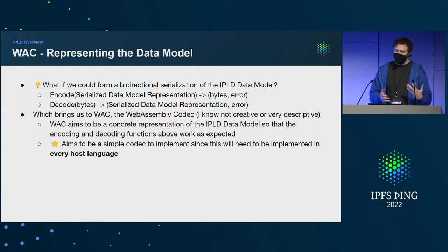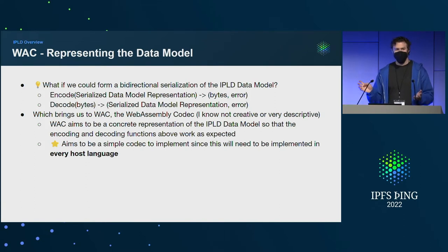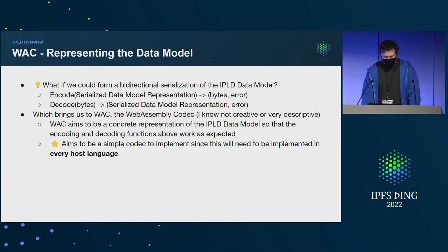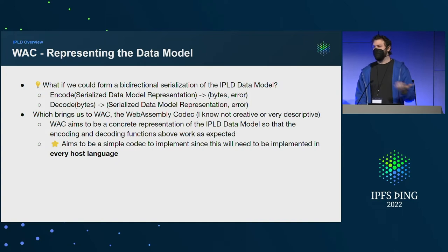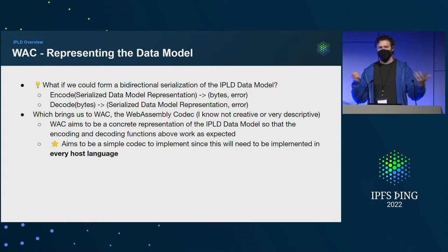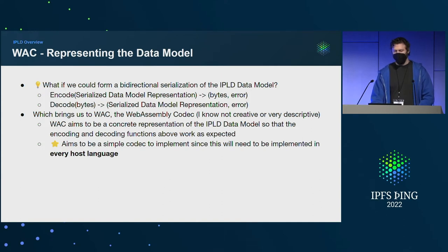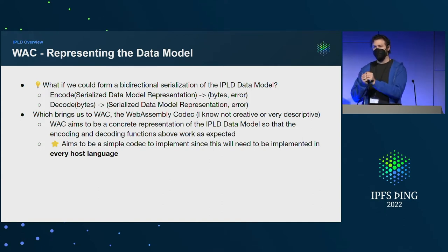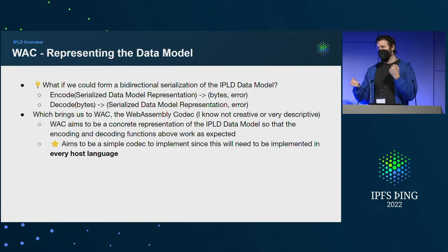That's this thing I wrote called WAC — the WebAssembly codec. I named it for the use case. The idea is it's supposed to be a concrete representation of the data model that's really easy to implement — I implemented it a couple of times in a few hours each. It has to be in all of the host languages so they can operate with it. The code will move around, but it has to interact with the outside world, which requires an interface, and you'll have to code all your hosts against that interface.